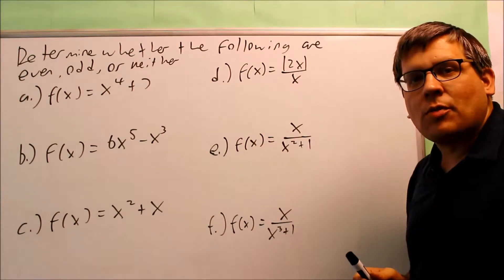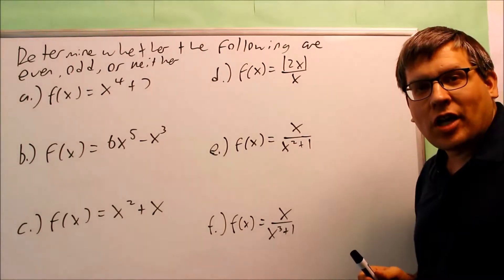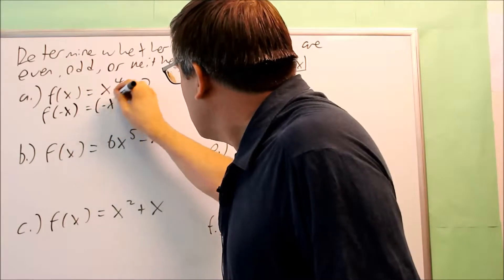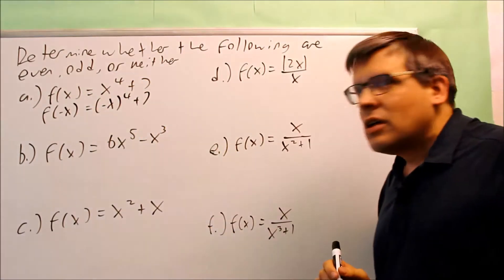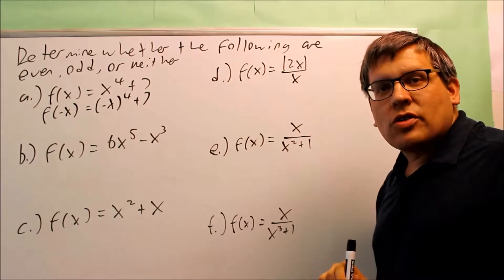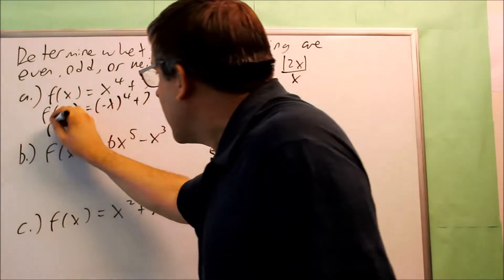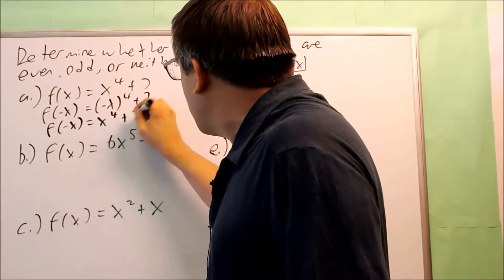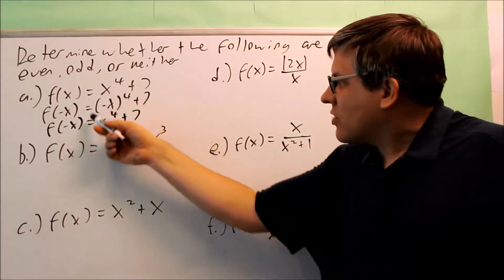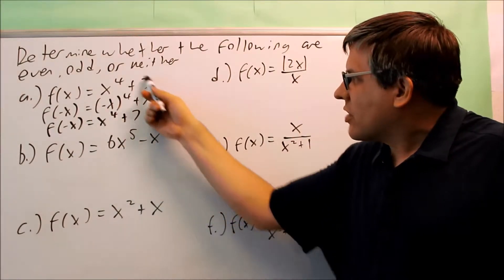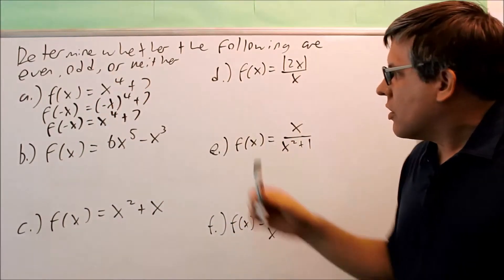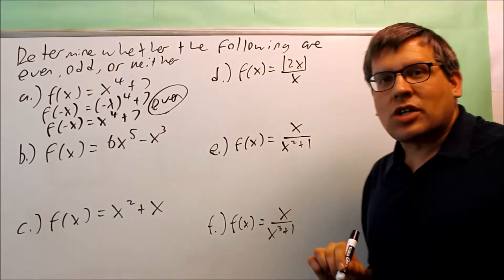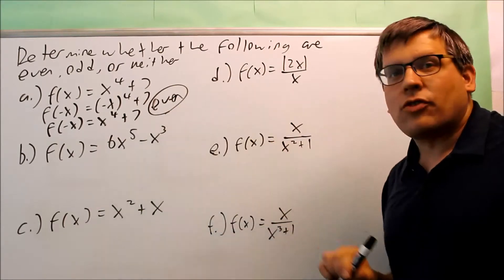For each of these, we want to start by putting in f of negative x. So for this one, f of negative x equals negative x to the fourth plus 7. Anytime you have a negative raised to an even power, the negative is going to go away. So f of negative x equals x to the fourth plus 7. That's exactly the same as the original, so this is going to be considered even — the definition of an even function.